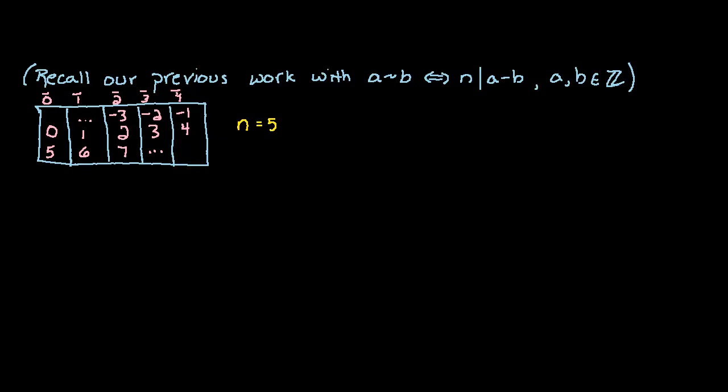So let's go back to this n divides a minus b business and come up with some equivalent formulations so that it's easier to conceptualize and work with. n divides a minus b if and only if a minus b is congruent to 0 mod n. In other words, the remainder after we divide by n is 0, and that's the same thing as saying that n divides a minus b.